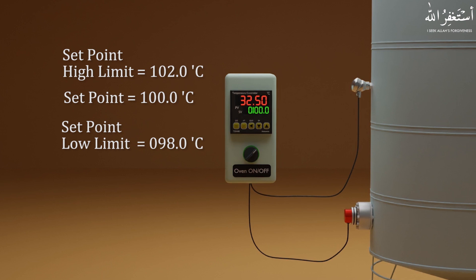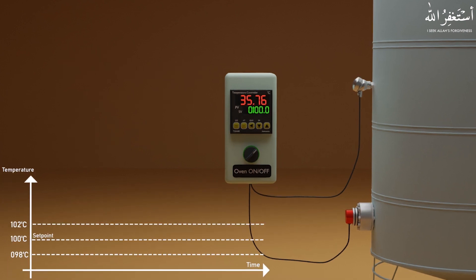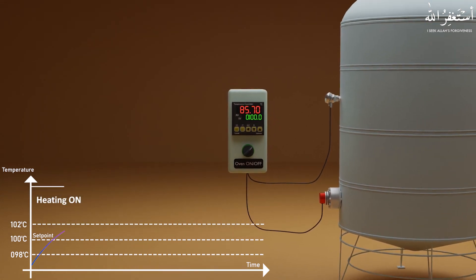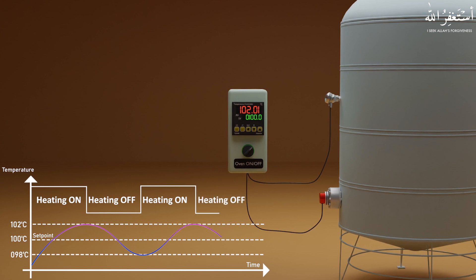As we start the process, the PID controller turns on the heater and the heater starts to heat the water, slowly raising its temperature. Since the setpoint is 100 degrees, the PID controller will try to keep the water temperature around 100 degrees by turning off the heater at 102 degrees and turning it back on when the water temperature drops to 98 degrees. So there is a variation of 2 degrees in the water temperature with respect to the setpoint. This type of PID control is a great and cost-effective solution where a little variation is acceptable.